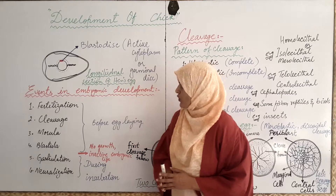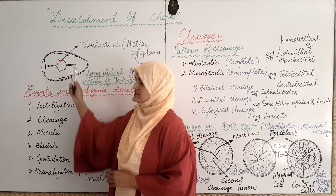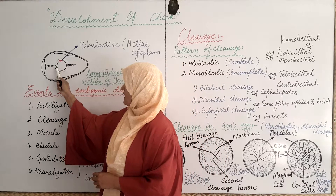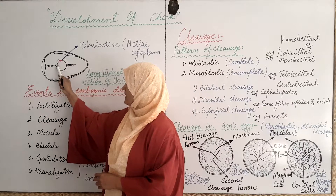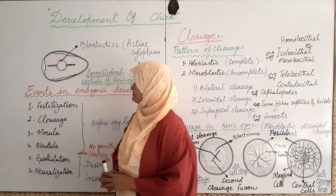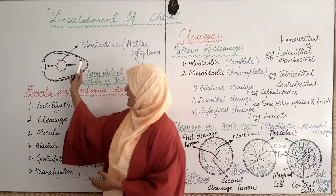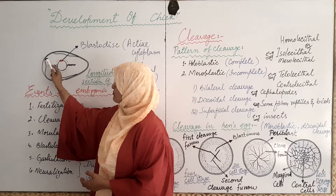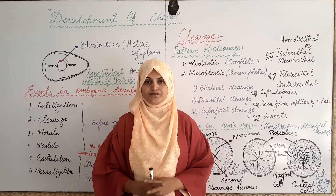This mature ovum is later on surrounded by a protein material which is termed as albumin. This albumin surrounds the egg outside the vitelline membrane. There is a vitelline membrane present around the egg. Outside the albumin, two shell membranes surround the albumin, and after that another calcareous porous hard material surrounds the egg to protect it from trauma.